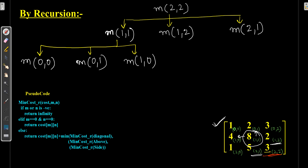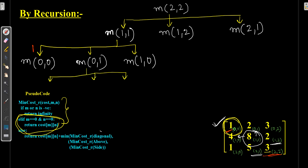For recursion there are two base conditions. The first: if M and N are (0,0), we take the array value as-is — so for (0,0) we take the value as 1. For (0,1), the diagonal element is M-1, N-1 which becomes (−1, 0).